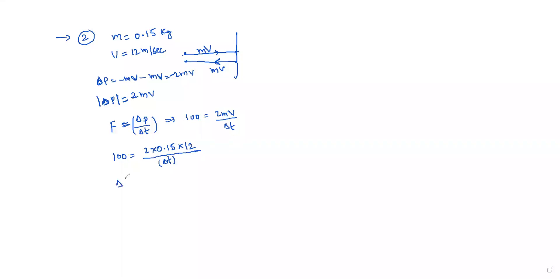Delta p is equals to 12 into 5, and delta t is 0.3. Substituting: delta p by delta t gives 3.6 divided by 100, which is 0.036. So the time of duration of contact of the ball with the wall is 0.036 seconds — that is the second option.